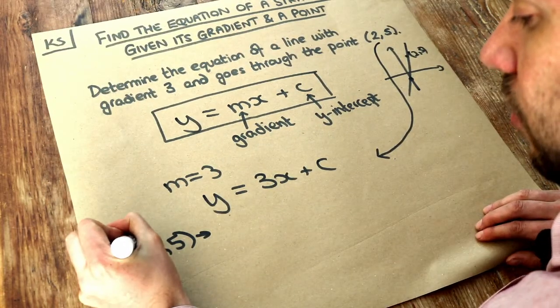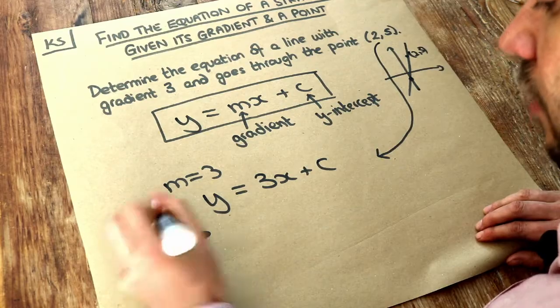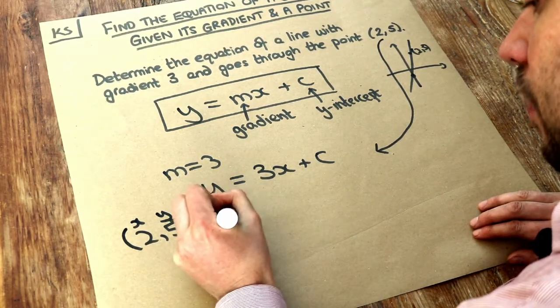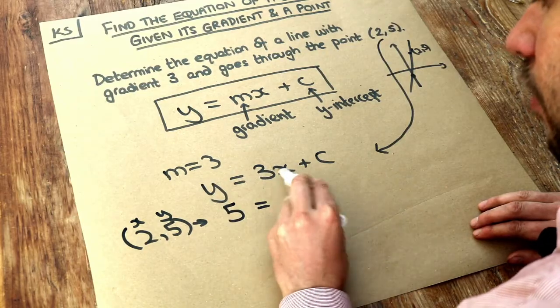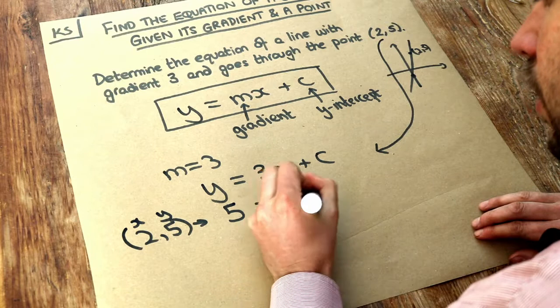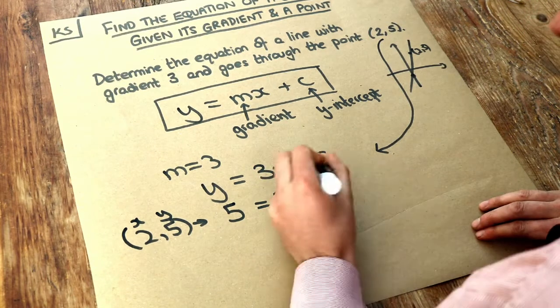Now remember, x is the 2, the y is the second value, the 5. So if y is 5, we sub in 5. 5 equals 3x, so 3 times the x value of 2, that just means 3 times 2, plus c.